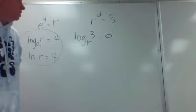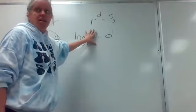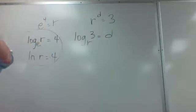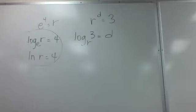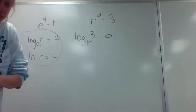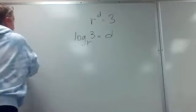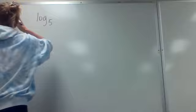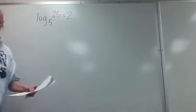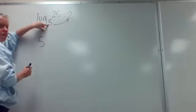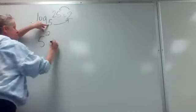Problems 21 through 24 give me a logarithmic equation and ask me to convert it to an exponential equation — going in the reverse direction. This is actually what we've been doing all along when we were finding logarithms. Number 21: log base 5 of 25 equals 2. The base of the log is the base of the exponent. So: 5 to the second power equals 25.